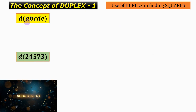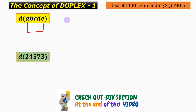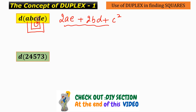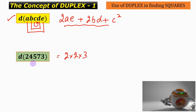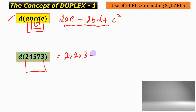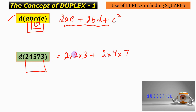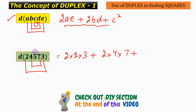The duplex of a five-digit number abcde is defined as: the two extremes a and e multiplied by 2, then 2 into b into d, plus the square of the middle term c squared. Hence the duplex of 2 4 5 7 3 will be 2 into 2 into 3, plus 2 into 4 into 7, plus 5 squared, and when added these quantities add up to 93.